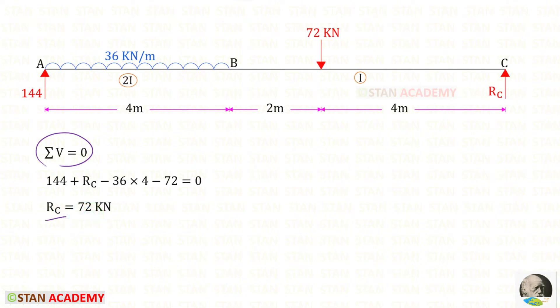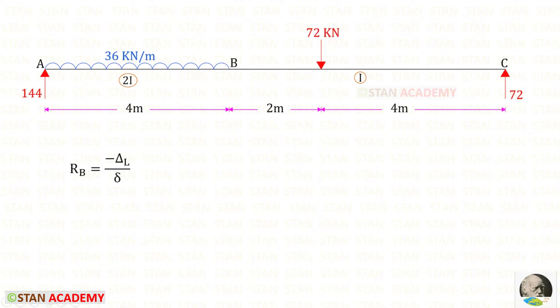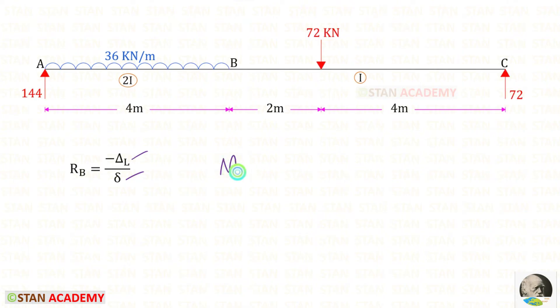Applying this rule, we find Rc = 72 kilo-newton. From the previous problem we know the formula to find Rb: Rb = −δ_L / δ. To find both δ_L and δ we are going to use the unit load method, in which we find the moments M (capital) and m (small).